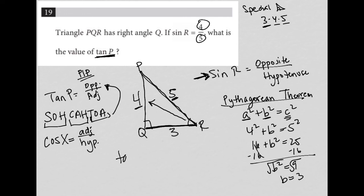So the tan of P, we go to angle P here, and I'll use a different color. The opposite of angle P is actually down here, which is three, so that's equal to three in the numerator.